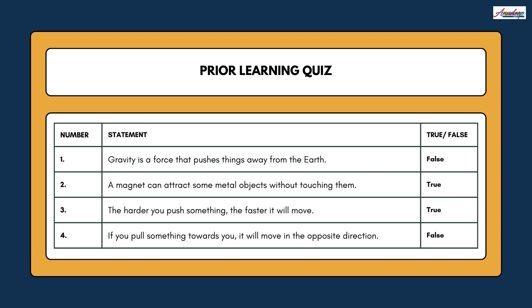So question number 1. Gravity is a force that pushes things away from the earth. So it's wrong. Gravity is a force that pushes things towards the earth. Question number 2. A magnet can attract some metal objects without touching them. Yes, it definitely.